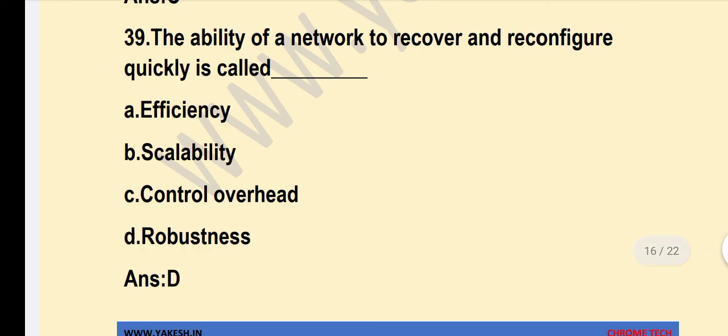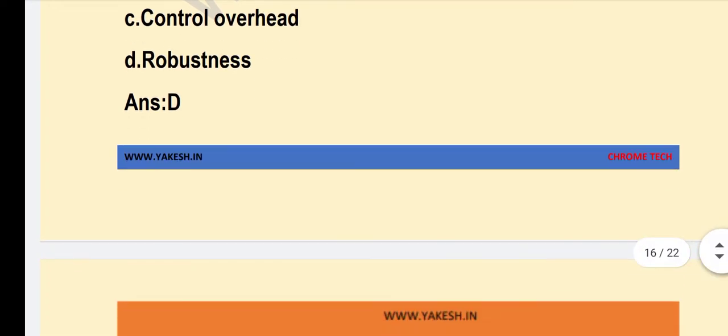The ability of a network to recover and reconfigure quickly is? Option D — Robustness — is the correct answer.